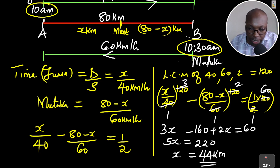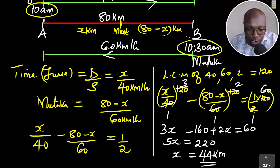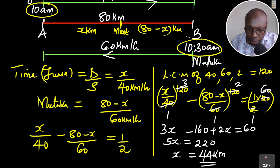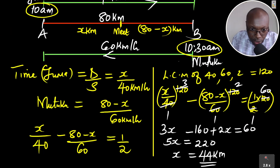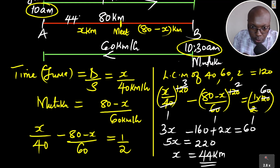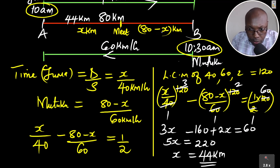X equals 44 kilometers, which is the distance from A to the meeting point — exactly what the question asked. The distance from B to the meeting point is 80 minus 44, which gives 36 kilometers.